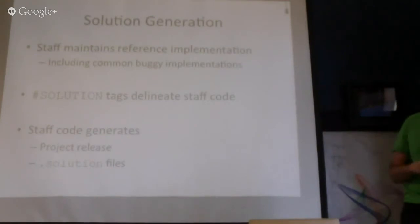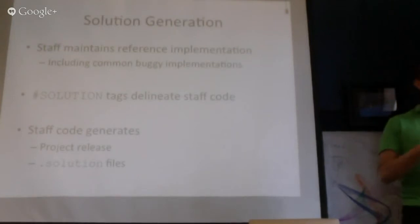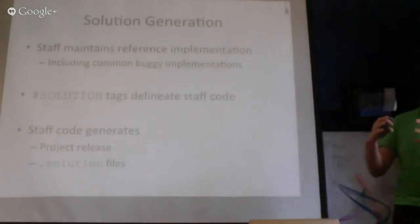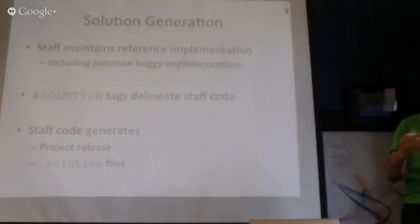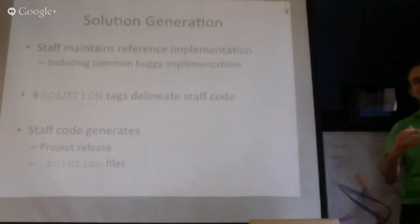Inside the reference implementation, we delineate various portions of the code with hashtag solution comments, then run a preprocessor that strips those parts out and inserts a 'your code here' comment into what the students receive. This is nice because it gives some assurance that it's possible for students to solve the problems we've given. Additionally, we maintain a couple of buggy implementations with common student errors, so when a student runs something, we can say 'your output is consistent with having a particular bug.'